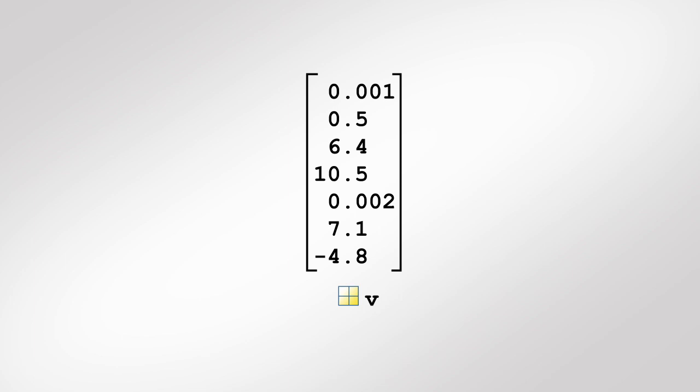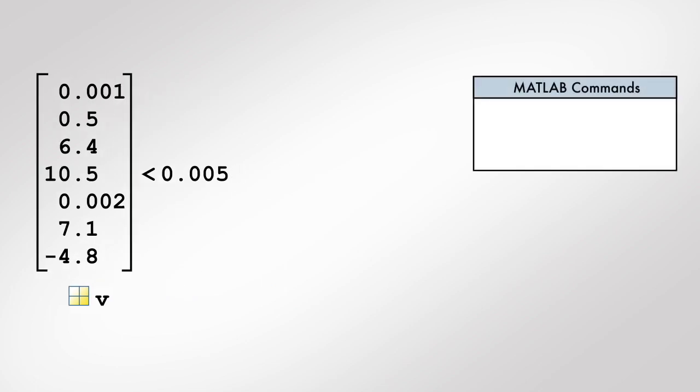For example, let us first look at how we can extract elements of v which are less than 0.005. We start by entering the command v less than 0.005, which uses a relational operator less than.